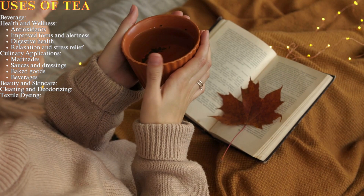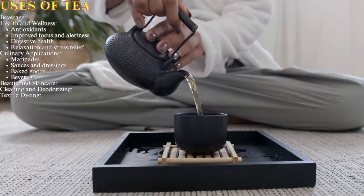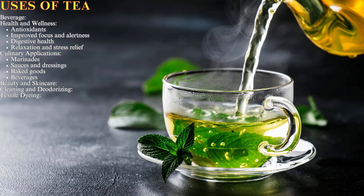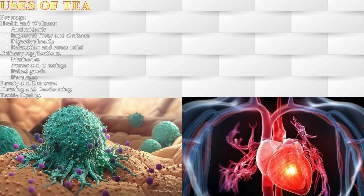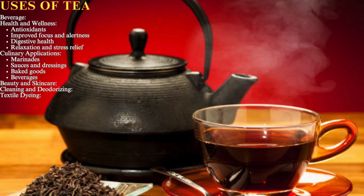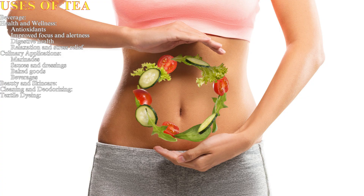Many types of tea are believed to offer health benefits. Green tea in particular is rich in antioxidants, which can help protect cells from damage and may reduce the risk of chronic diseases like cancer and heart disease. Many teas, especially black tea, contain caffeine which can help improve focus and alertness.